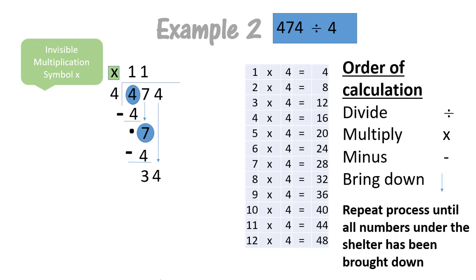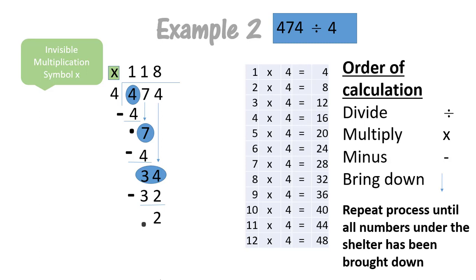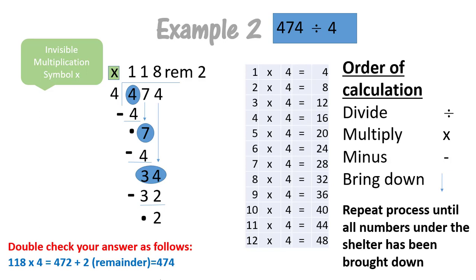Can four go into 34? Yes, it can, because 34 is bigger than four. How many times does four go into 34? Eight times. And then we multiply: eight times four equals 32. Then we subtract: four minus two equals two, and three minus three equals zero. Now we have to see if our sum is complete — there aren't any more numbers to bring down underneath the shelter. So our remainder for this sum is number two. We can now double check our answer: 118 times four equals 472, then we add our remainder of two, and we'll bring our total to 474.